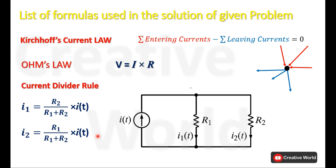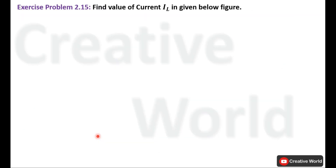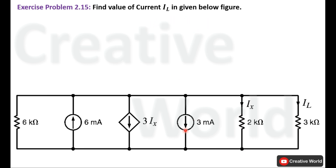Now let's move towards the problem. Exercise problem number 2.15: find the value of current IL in the figure below. This is the circuit diagram of the given problem. We have to find the value of current IL through this branch inside this circuit.